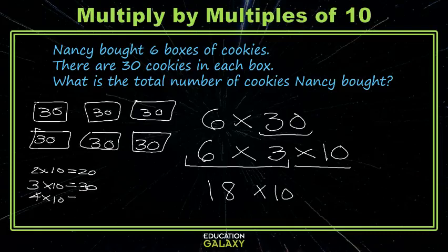So what you see happening is a little pattern — this factor that we're multiplying by 10 is moving from its original place value to the next place value up. So my 2, which is in the ones place, becomes a 2 in the tens place.